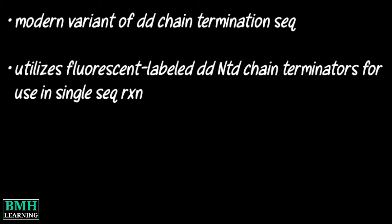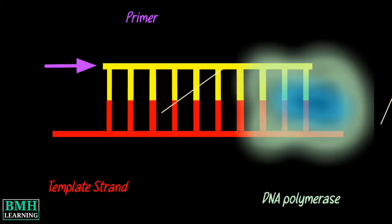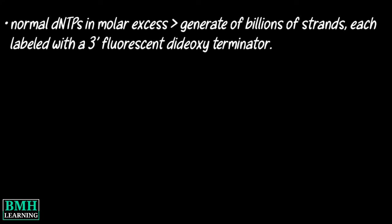The modern method utilizes fluorescent-labeled dideoxy nucleotide chain terminators for use in a single sequencing reaction. During strand synthesis, when polymerase encounters a labeled nucleotide, strand synthesis is terminated. Use of molar dNTPs in molar excess allows for generation of billions of strands.